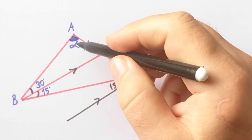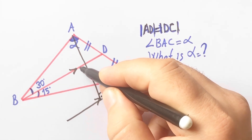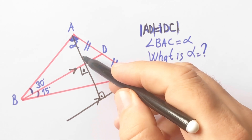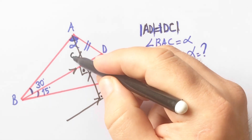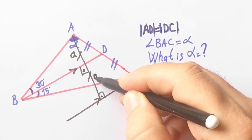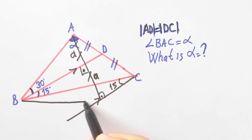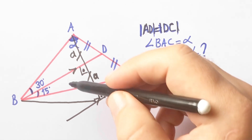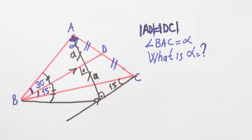Let's draw a perpendicular line like this — here will be 90 degrees. AD is equal to DC, so these two parts are equal because of similarity. Let's call these two parts A units. These two parts are equal, and if you connect here, this is a bisector line, so these two angles will be equal, and here will be 15 degrees.